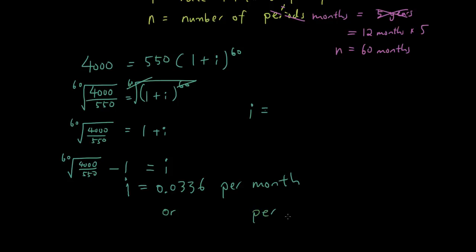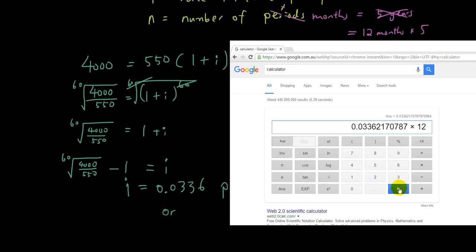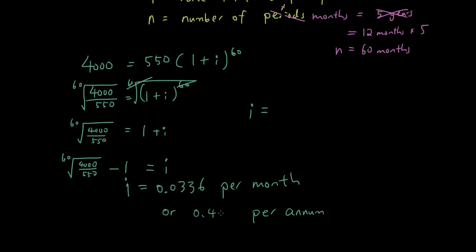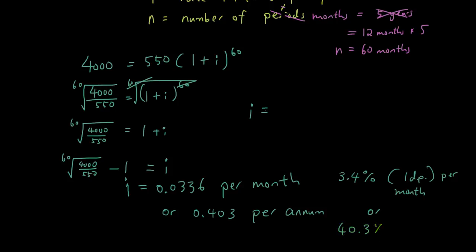So for an investment to start at 550 and grow to 4,000, it needs an interest rate of 0.0336 per month. If you want it per annum, multiply by 12 to get 0.403. To express as a percentage, multiply by 100: that's 3.4% per month, or 40.3% per annum.